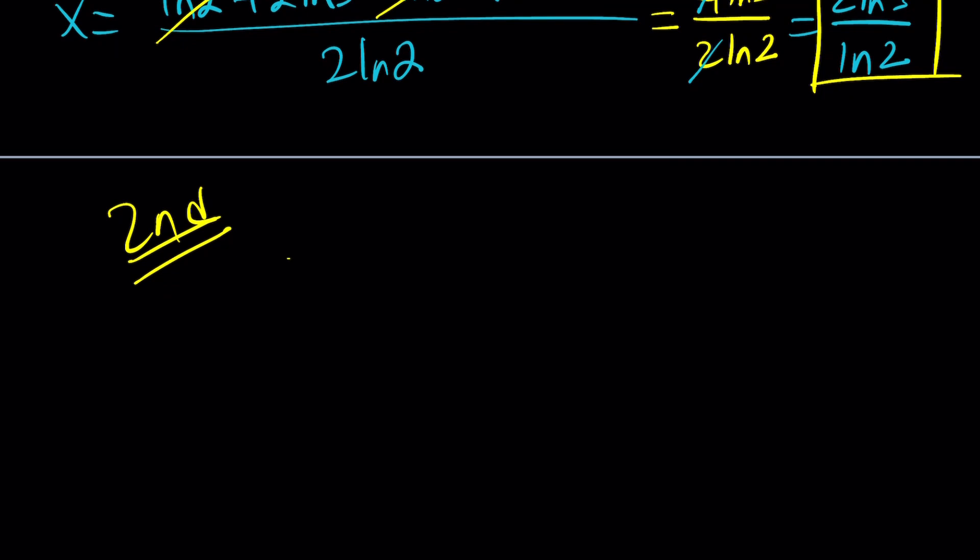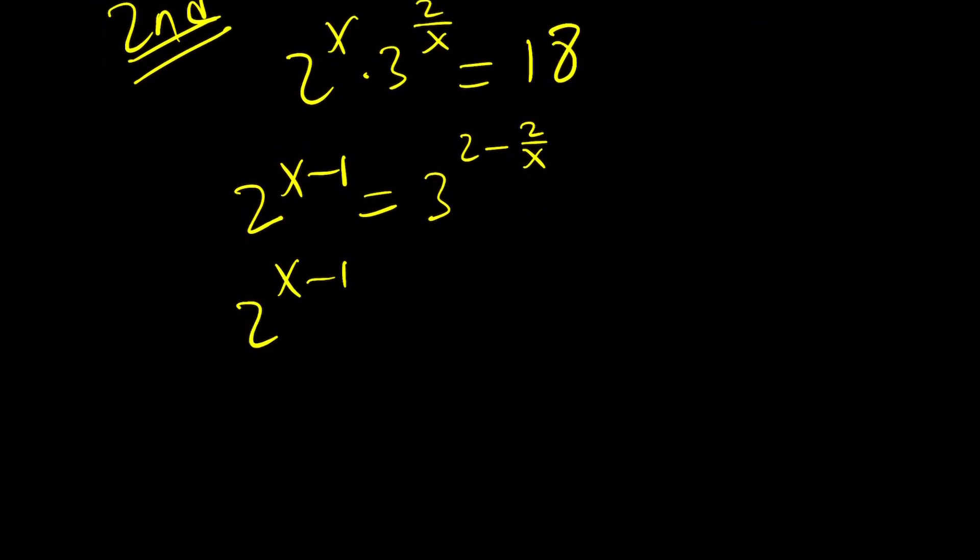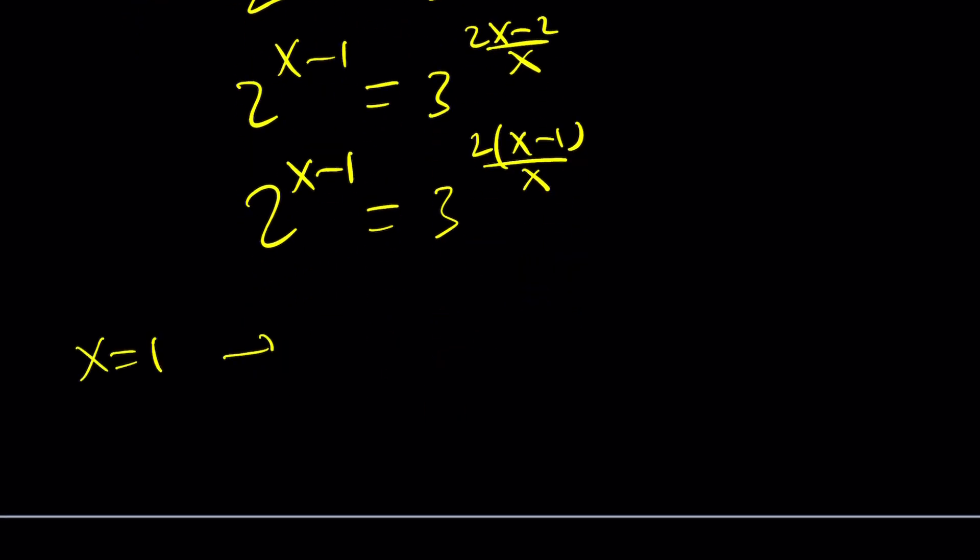So here's how the second method works. We have 2 to the x times 3 to the 2 over x equals 18. And remember, we put the 2s together and the 3s together, and we got something like this: 2 to the power x minus 1 equals 3 to the power 2 minus 2 over x. Now we can write it as 2 to the power x minus 1 equals 3 to the power 2x minus 2 over x. And then we can actually factor out a 2 here, which is the critical part. Notice that x equals 1 satisfies this, because if x is equal to 1, then you get 2 to the 0 and 3 to the 0, which are equal. So once we get that out of the way, which is a solution, we can cancel them out.